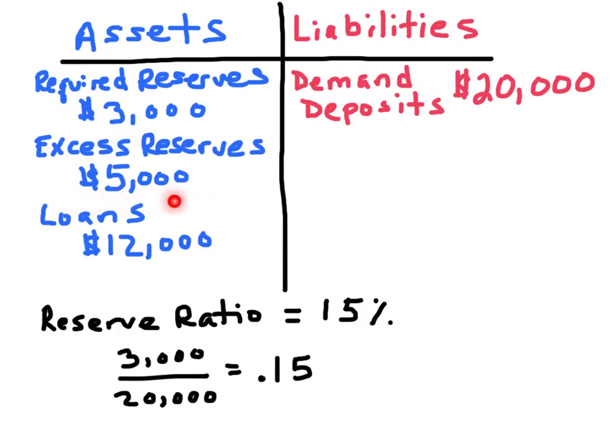Now this bank chose to hold on to an additional $5,000, so in theory this bank can lend out an additional $5,000. It's called a balance sheet because both sides must balance after each transaction. The liabilities are equal to $20,000, and when we add up all of the assets — $12,000 plus $5,000 plus $3,000 — we get $20,000.